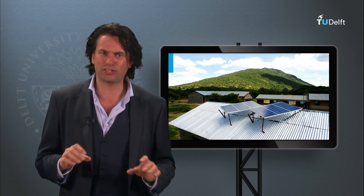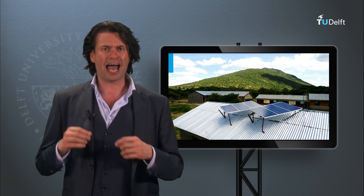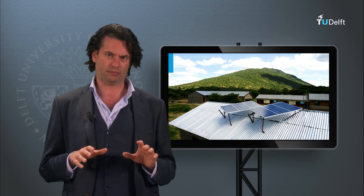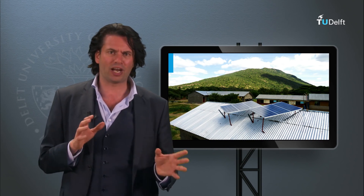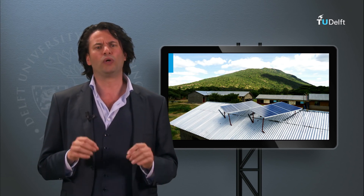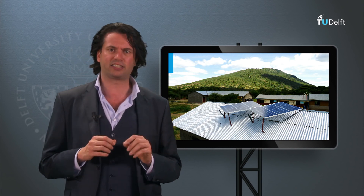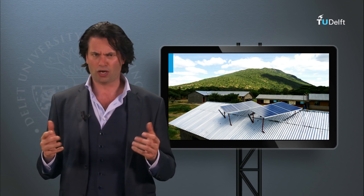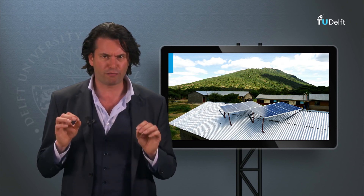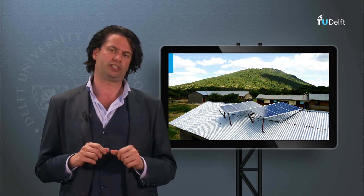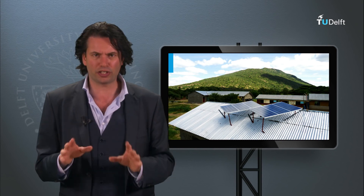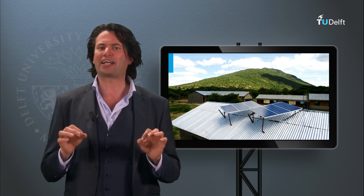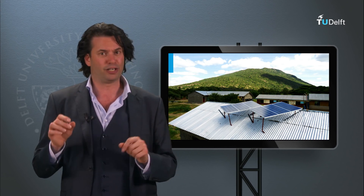We have seen a simple method to design a standalone PV system based on load requirements and available system components. Note that this is not the most exhaustive way to design a PV system. This method works better for places with more or less consistent irradiance levels. For places with severe disparity between summer and winter irradiances, the number of autonomous days would increase for winter and system costs would consequently rise. Also, the components' margins considered for various parameters could differ based on system requirements. Nonetheless, this method is good enough to get a basic estimate of the standalone PV system sizing. You will be able to practice more on this in the exercises of this week.